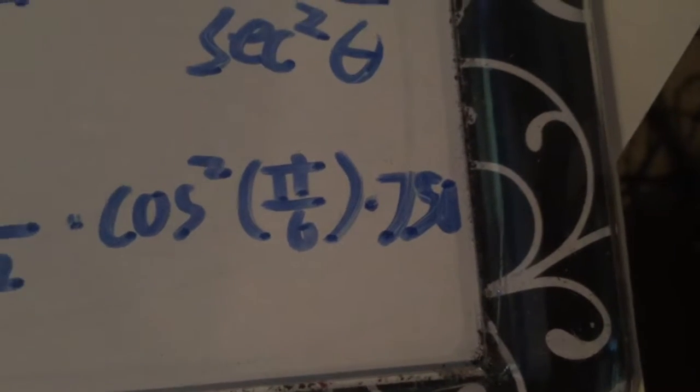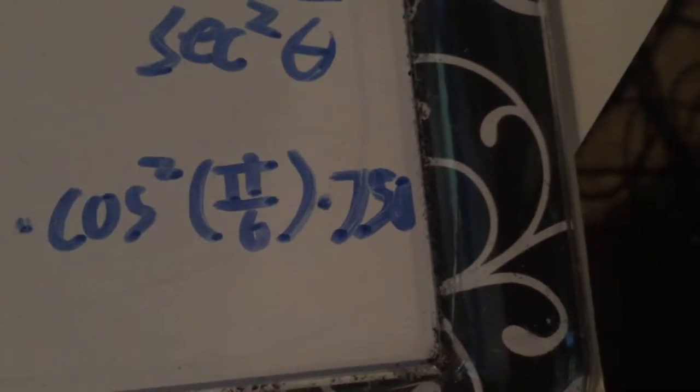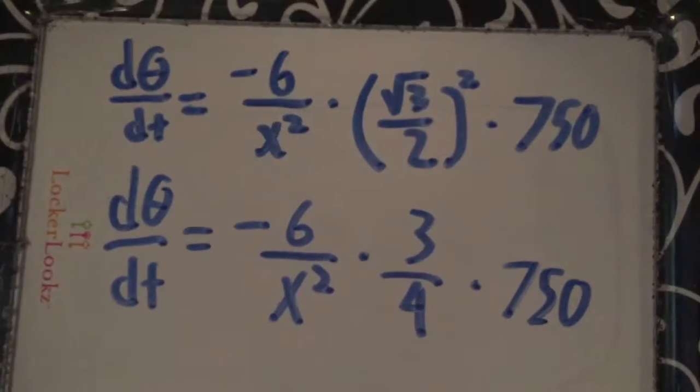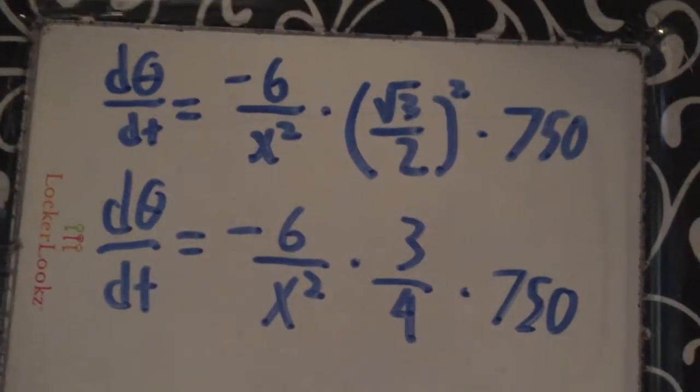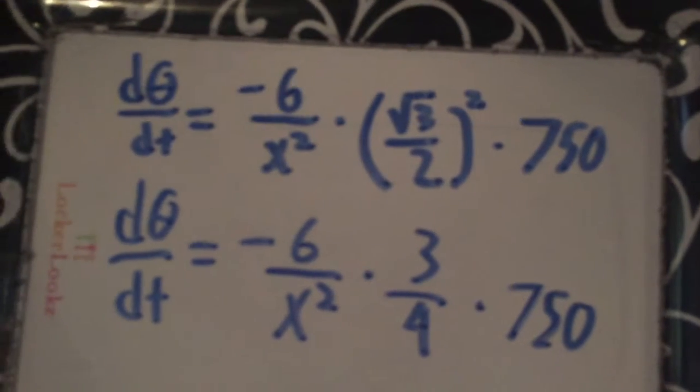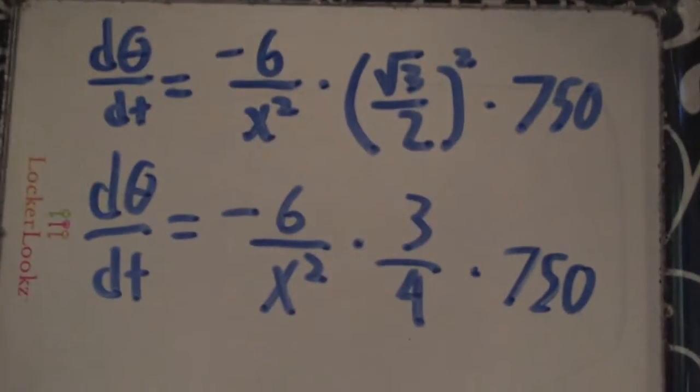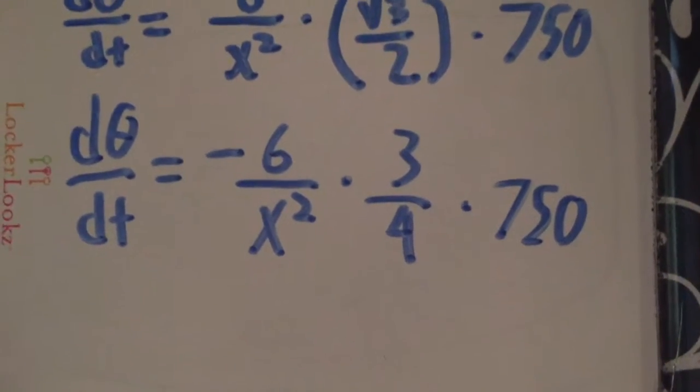dx dt as the equation gives us is 750 miles per hour. Cosine of pi over 6 is equal to the square root of 3 divided by 2, all to the second power which in turn equals 3 over 4.